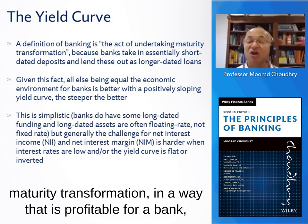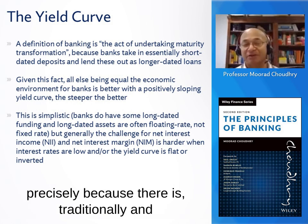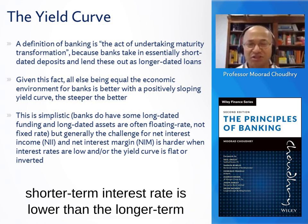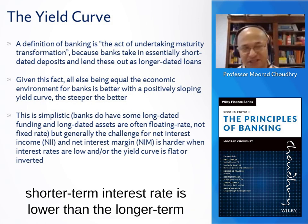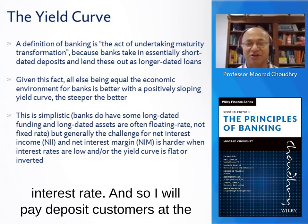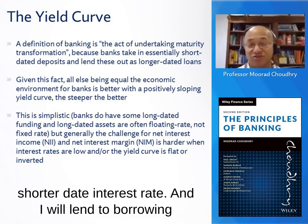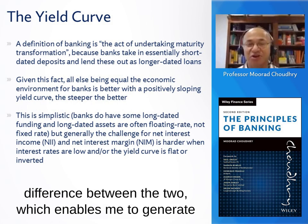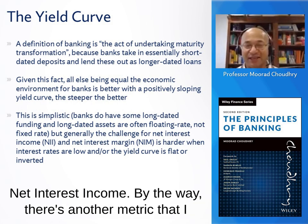We are able to undertake maturity transformation in a way that is profitable for a bank precisely because there is traditionally and conventionally a positively sloped yield curve, where the shorter-term interest rate is lower than the longer-term interest rate. So I will pay deposit customers at the shorter-date interest rate and I will lend to borrowing customers at the longer-date interest rate.